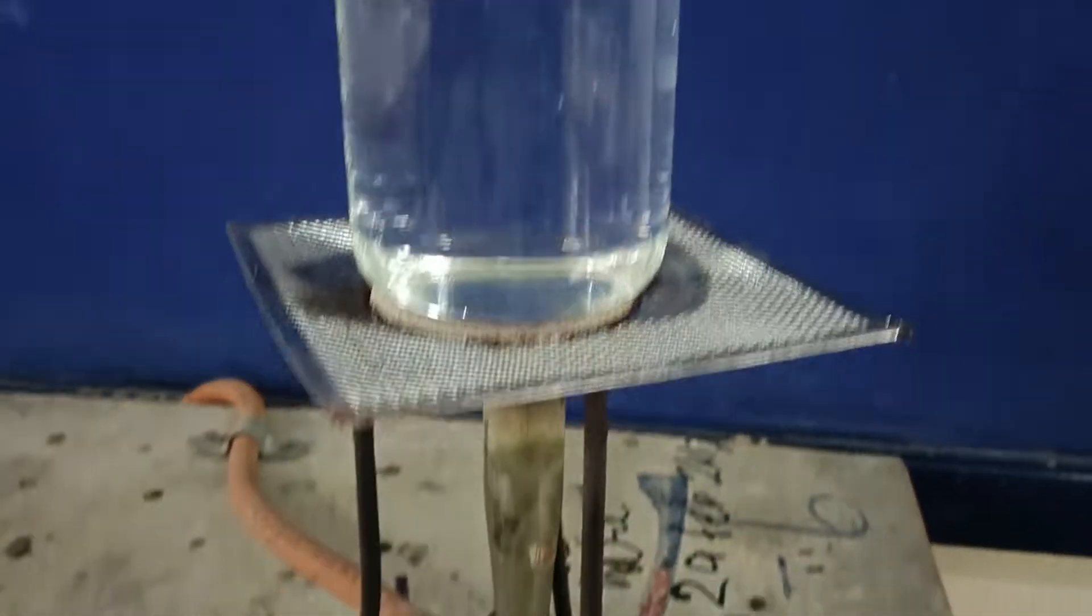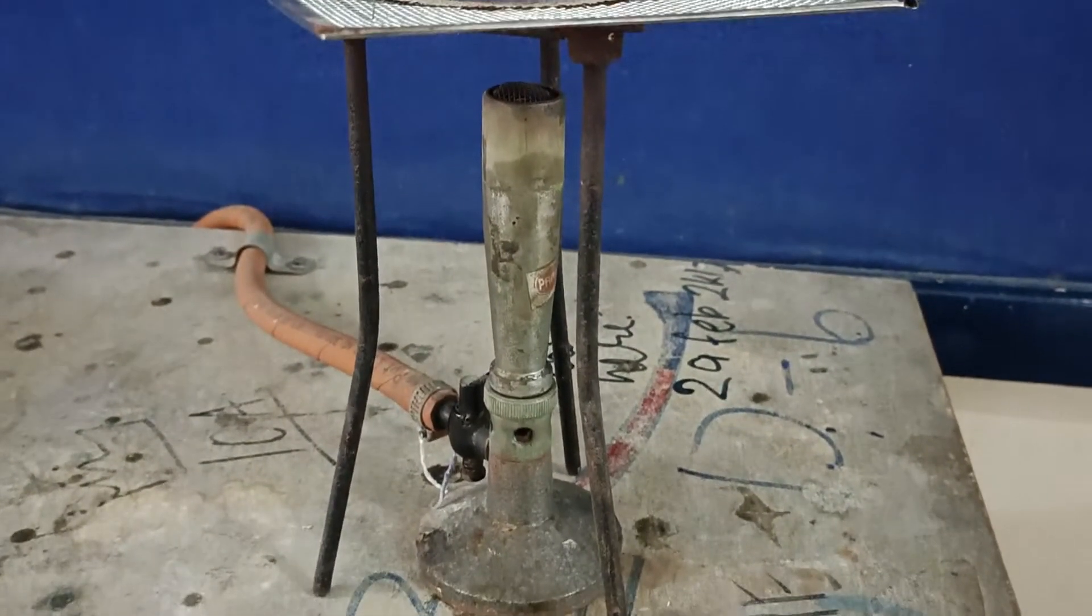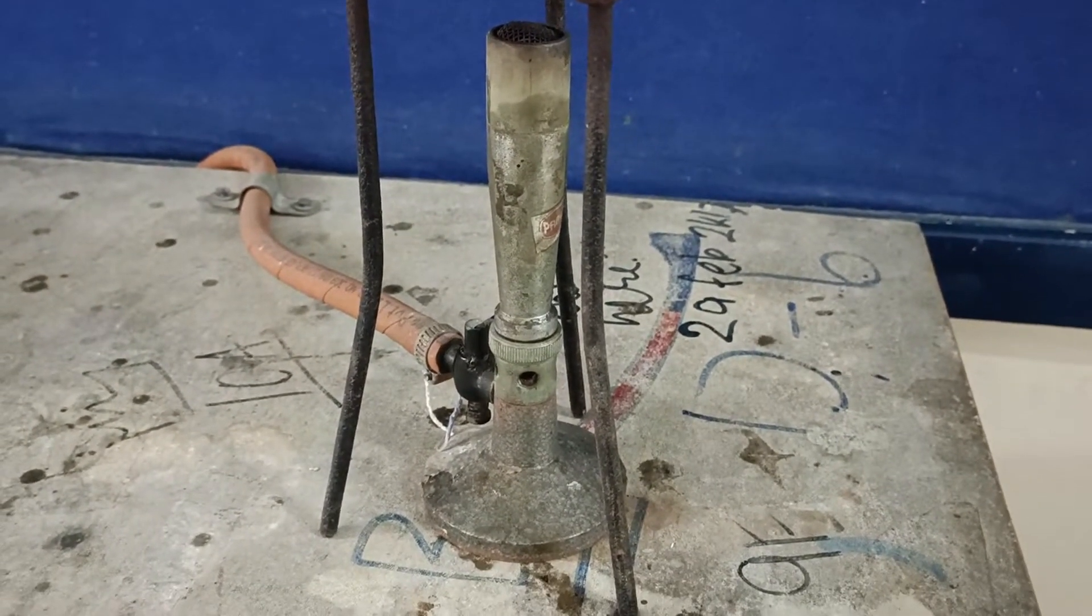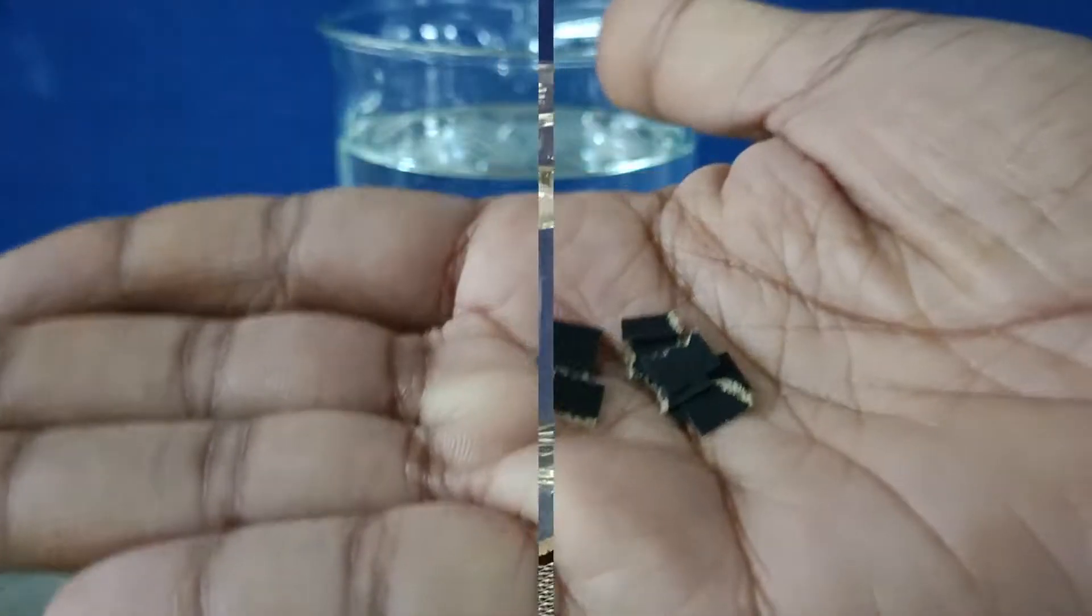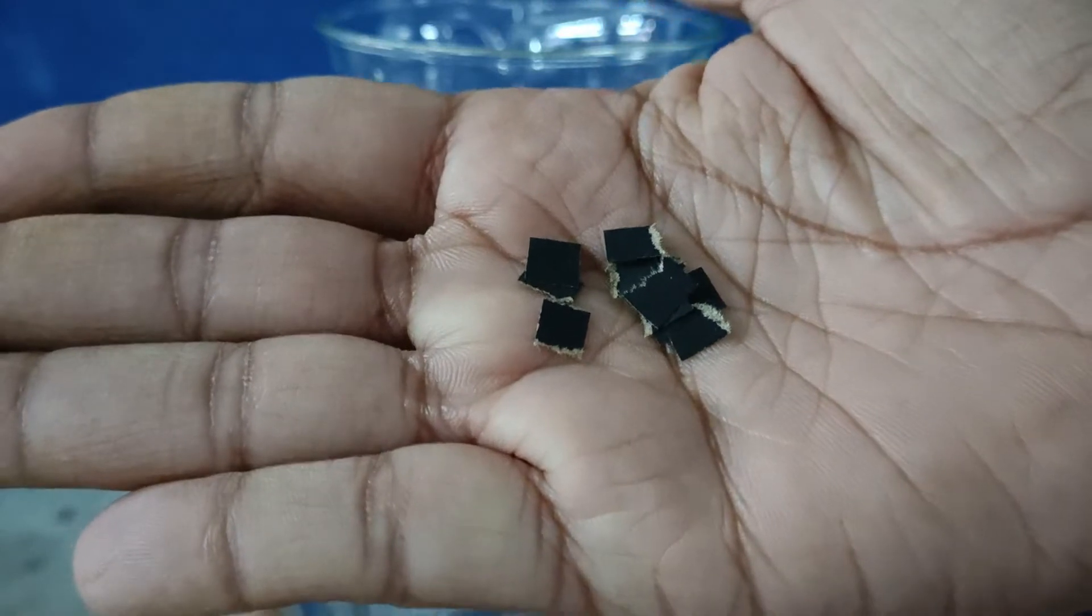Here I have taken a beaker three-fourths full of water placed over a Bunsen burner. I have taken a few black pieces of paper.